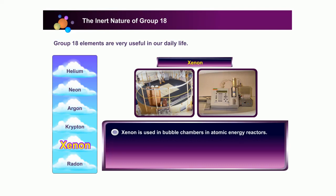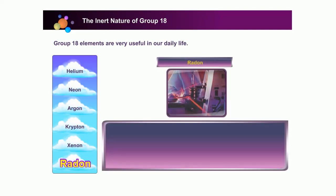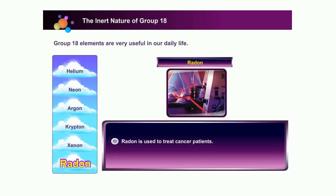Xenon is used in bubble chambers in atomic energy reactors and is also used to fill bulbs in liquid gas chromatography. Radon is used to treat cancer patients by killing cancer cells using radon rays.